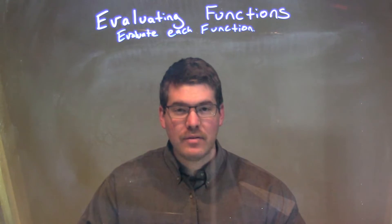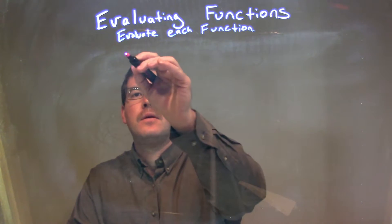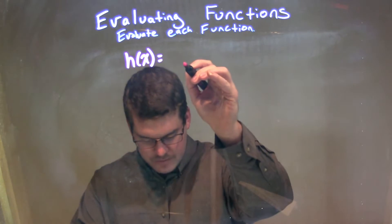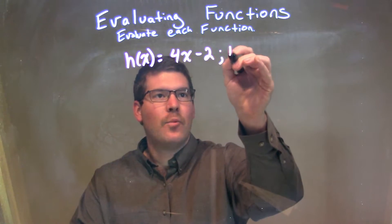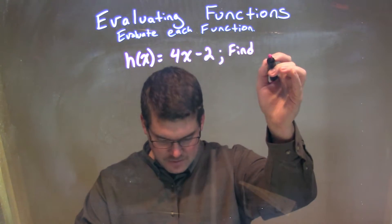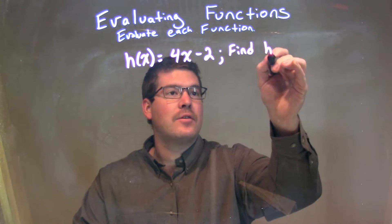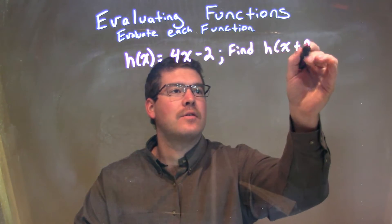So, if I was given this function, h of x is equal to 4x minus 2, and we need to find h of x plus 2.